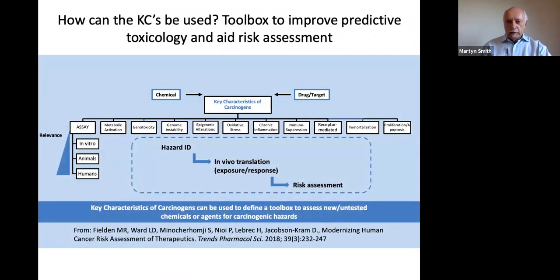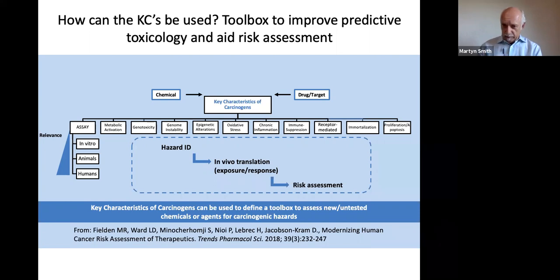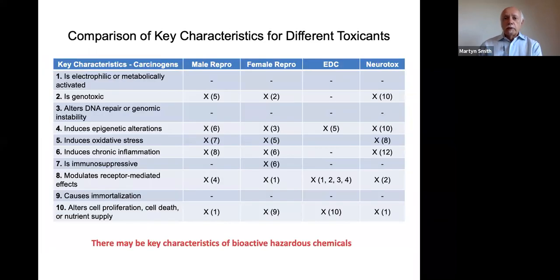The big thing that needs to happen now is the development of tests — or the description of already existing tests and their assignment to particular KCs — to understand that we're looking at the complete picture when we test chemicals. For endocrine disrupting chemicals, for example, we may actually be missing a lot of possible effects on things that are not usually tested for, and this may be true also for environmental chemicals for cardiotoxicity and perhaps other endpoints.